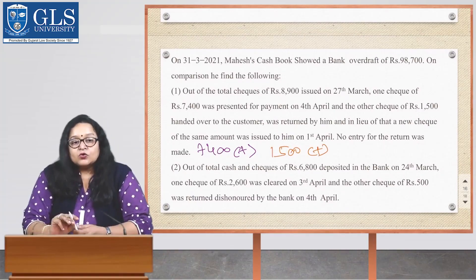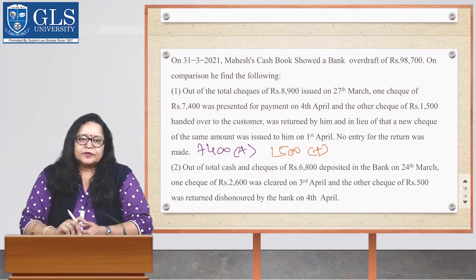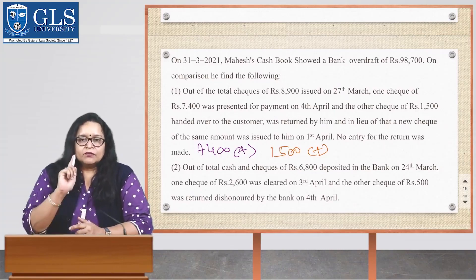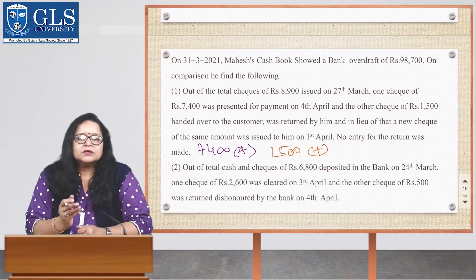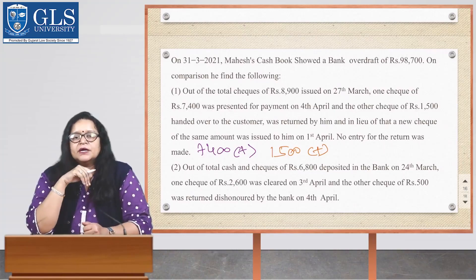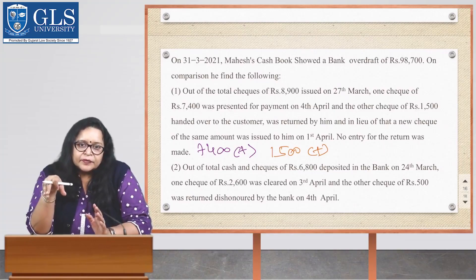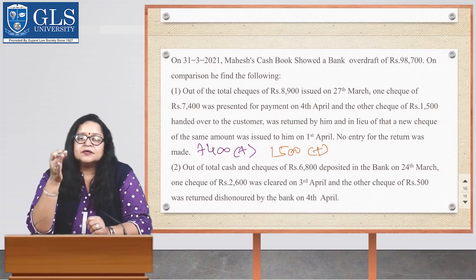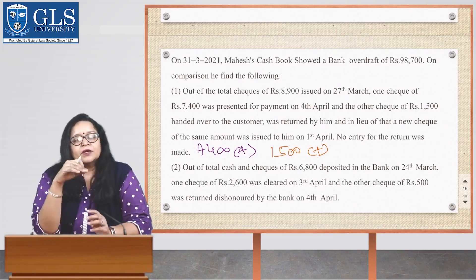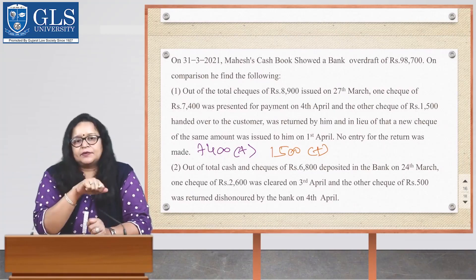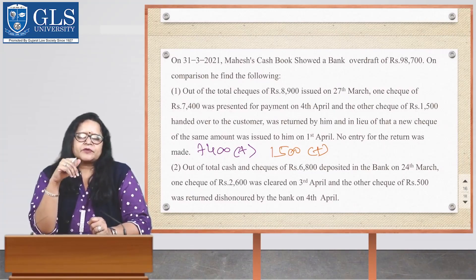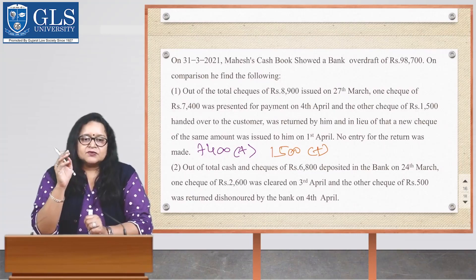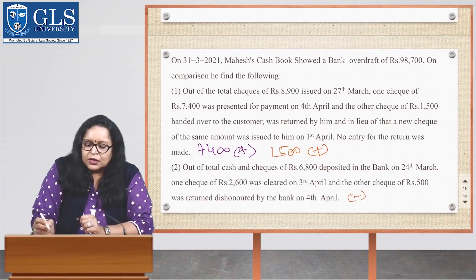Out of total cash and checks of Rs. 6,800 deposited on 24th March, one check of Rs. 2,600 was cleared on 3rd April — since it cleared in the next month, deduct Rs. 2,600. Another check of Rs. 500 was returned dishonored by the bank on 4th April — deduct Rs. 500 as well. Both are to be deducted.